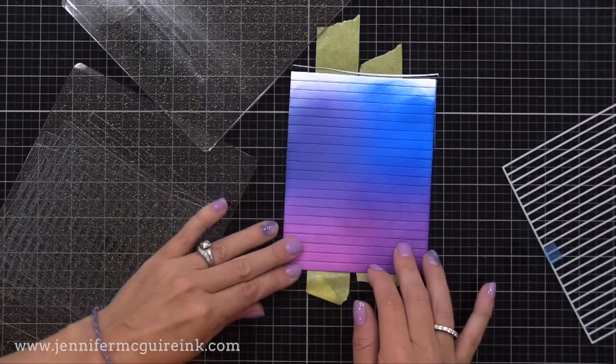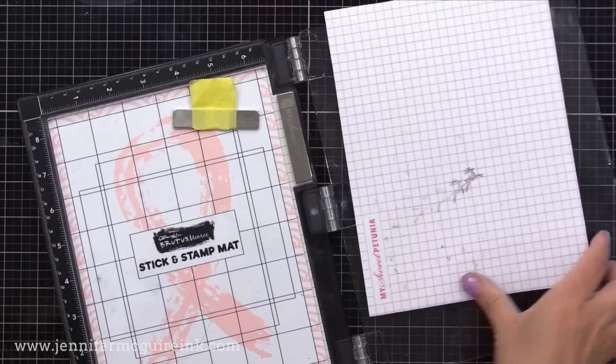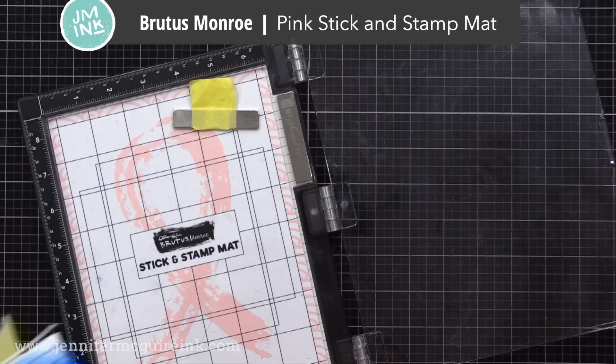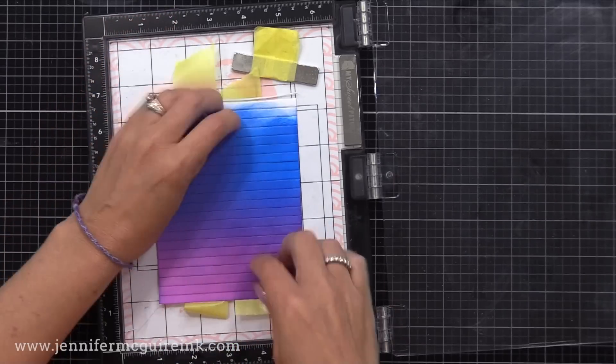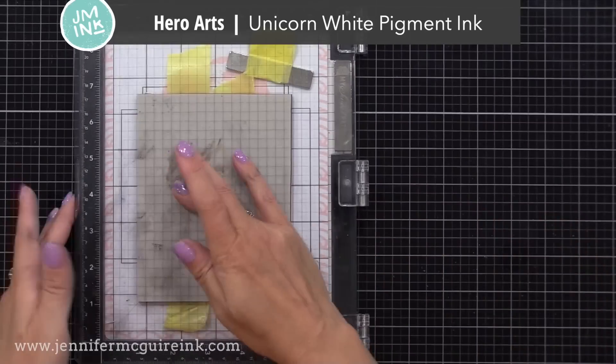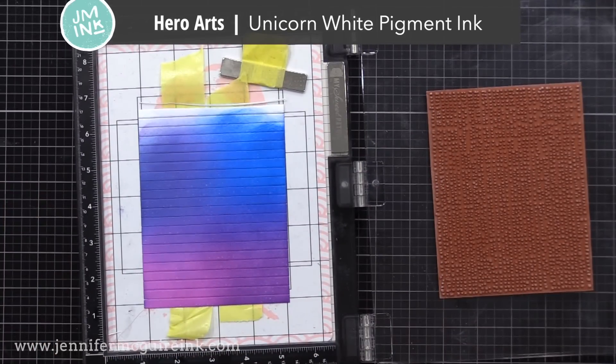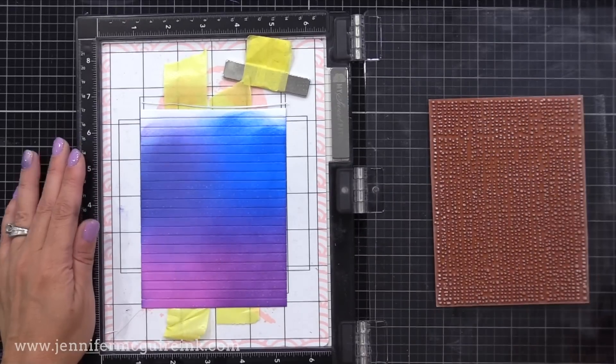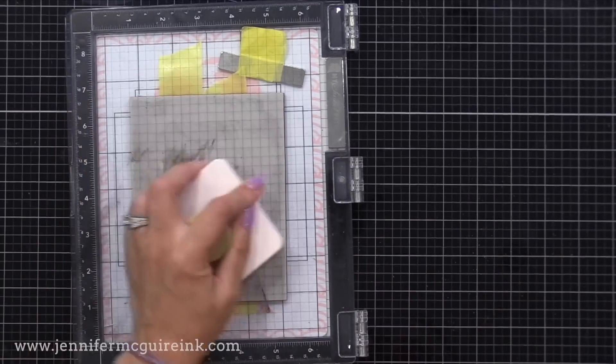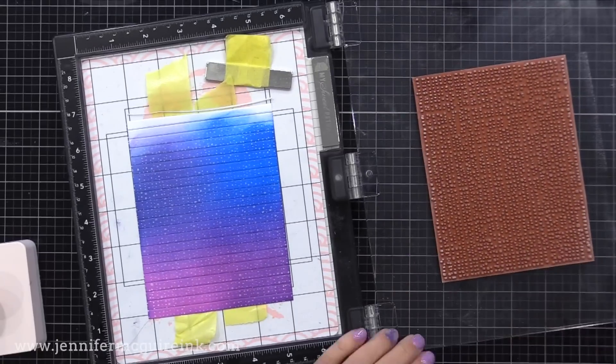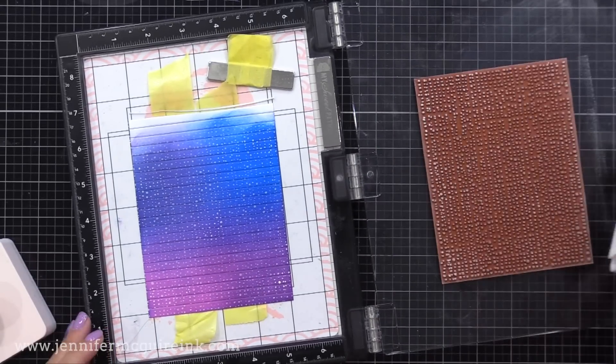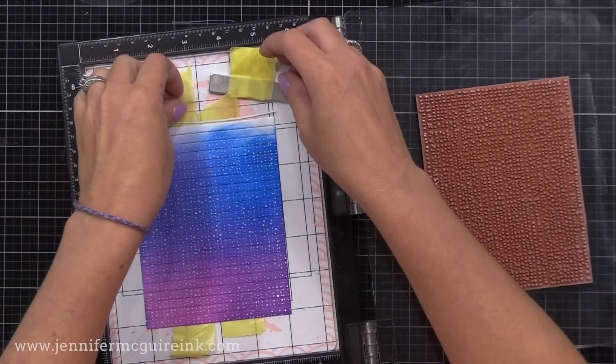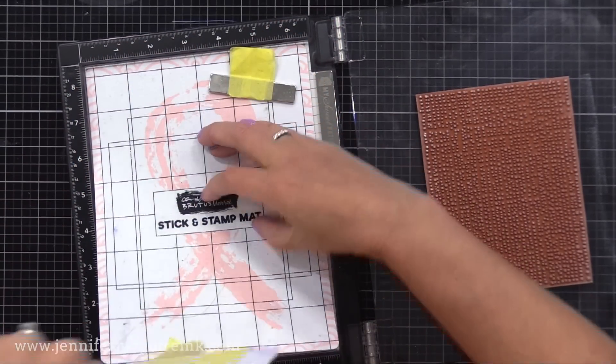Now I can remove the tape from the front, and pull all my strips out, all connected. At this point, I thought it'd be fun to add that background stamp. Now I have in my Misti stamping tool, the Brutus Monroe Pink Stick and Stamp Mat. I'm stamping with that background stamp with white pigment ink. This will be very faint on here. If you want bold white, you could do white heat embossing. But white pigment ink gives a beautiful, soft kind of highlighted look.